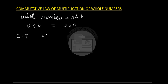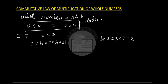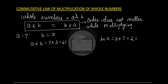Let us take an example. If a is 7 and b is 3, then a times b is 7 times 3, which is 21, and b times a is 3 times 7, which is also 21. So a times b is the same as b times a — the order does not matter while multiplying whole numbers. This is called the commutative law of multiplication of whole numbers.